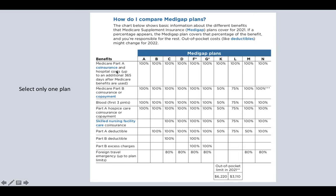Medigap has 10 standardized plans to choose from. They cover gaps in Original Medicare such as Part A coinsurance, deductibles, Part B 20% co-insurance, and other costs. Plan G is a good choice. Once you choose a Medigap plan you cannot easily change it later, so it's very important to do your research and make your decision within the six-month open enrollment window after you enroll in Part B.